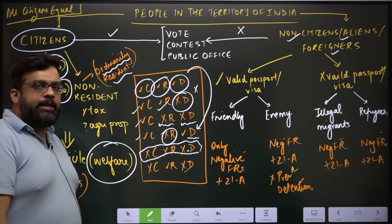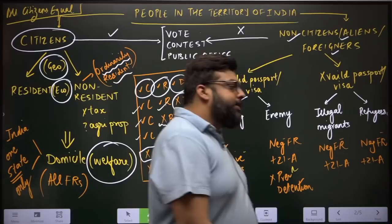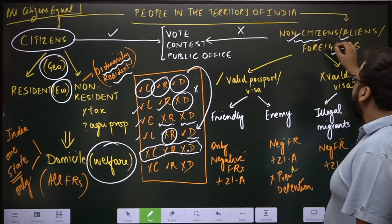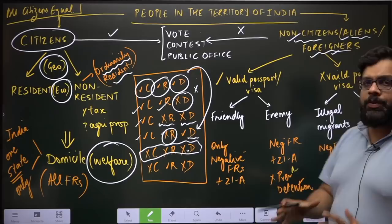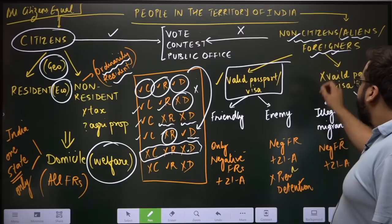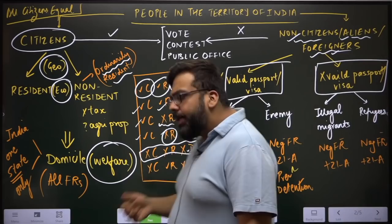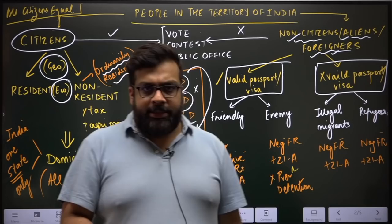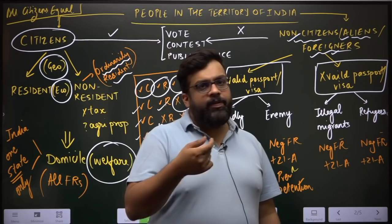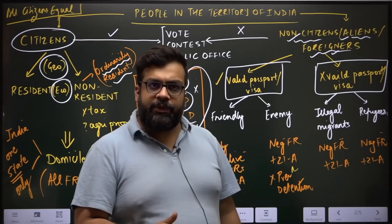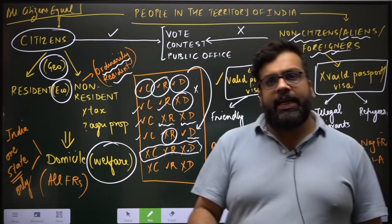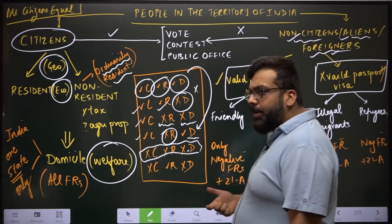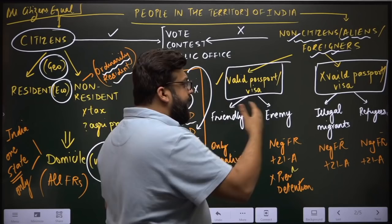Now let us understand people who are not citizens of India — non-citizens, aliens, or foreigners. There are broadly two kinds: people who have valid documentation and people who do not. Valid documentation comprises two elements: a legitimate, unexpired, non-counterfeit passport, and a valid legal visa or permission to stay in India. As long as both requirements are fulfilled, you have valid documentation.